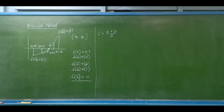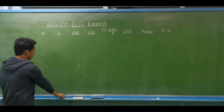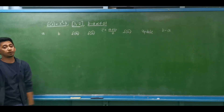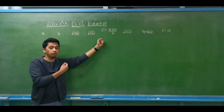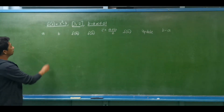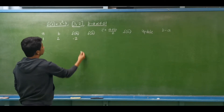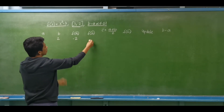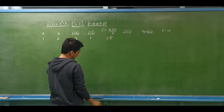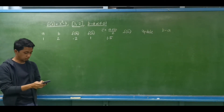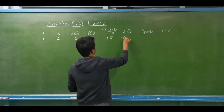Let's look at an example. We have the function f of x equal to x squared minus three. Our initial interval is from one to two. We stop the iteration when the difference of our limits is less than 0.01. Starting with the initial limits, a equals one and b equals two. f of a equals one squared minus three, which is negative two. f of b equals two squared minus three, which is positive one. We take the average: one plus two divided by two equals 1.5. f of c equals 1.5 squared minus three, which is negative 0.75.